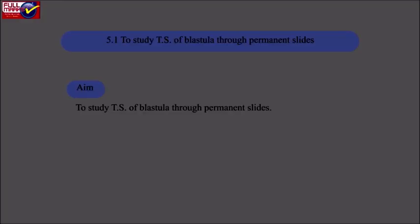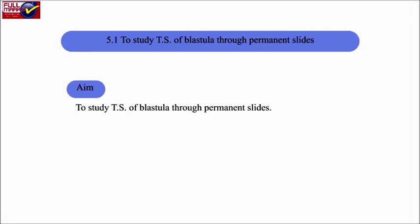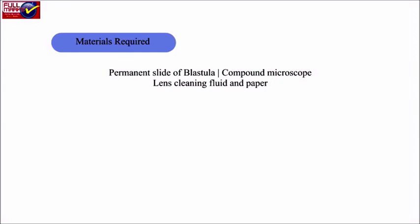5.1 To study T.S. of blastula through permanent slides. Aim: To study T.S. of blastula through permanent slides. Materials Required: Permanent slide of blastula, compound microscope, lens cleaning fluid and paper.